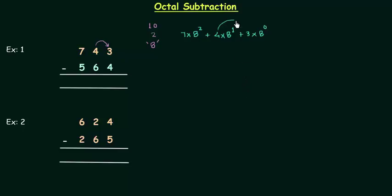And when this 4 gives 1 as borrow, what we have is 1 multiplied by 8 raised to power 1. This position is for 8 raised to power 0. So we have to write this as 8 multiplied by 8 raised to power 0.